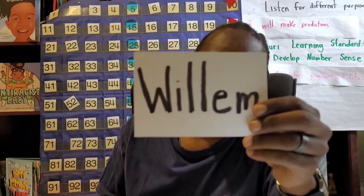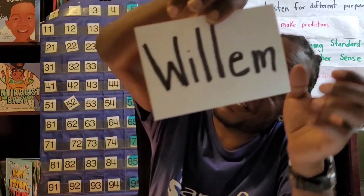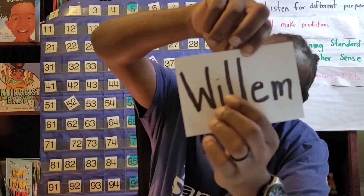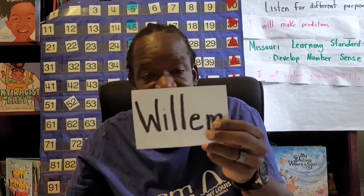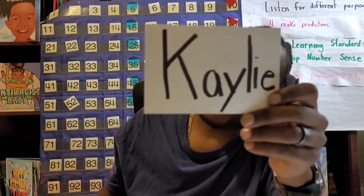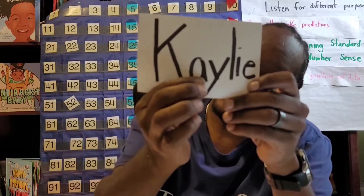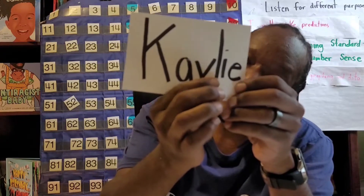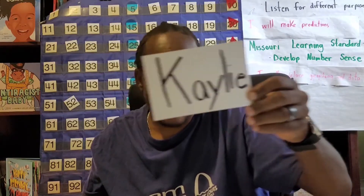Whose name was this? Willem's. That's Willem's name. Let's see how many letters Willem has in his name. One, two, three, four, five, six. He also has six letters. Hi, Willem. And whose name was this? Kaylee. That's right. Let's count Kaylee's letters. One, two, three, four, five, six. Kaylee has six letters in her name.